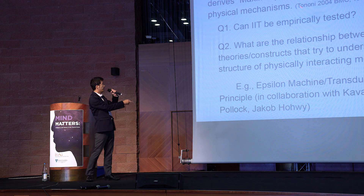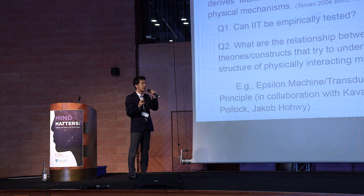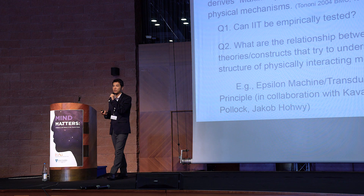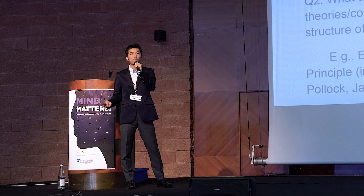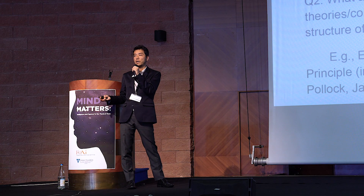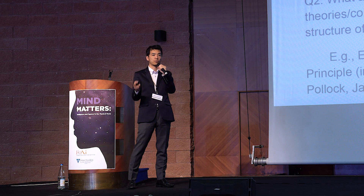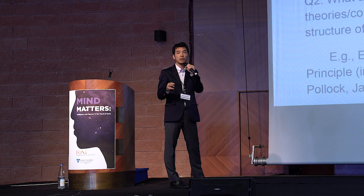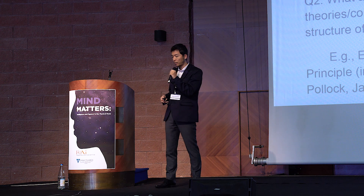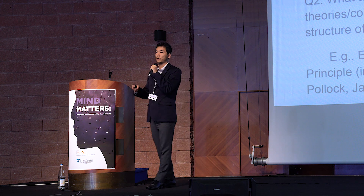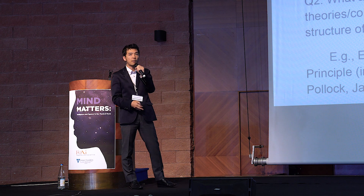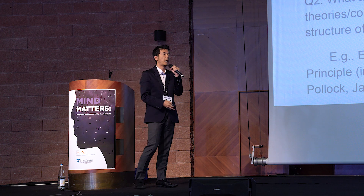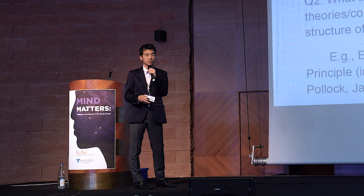IIT identifies several essential properties of consciousness, such as existence, information, integration, composition, and exclusion. From this set of properties, it tries to derive some kind of mathematical formalism, and then get to predictions about consciousness.